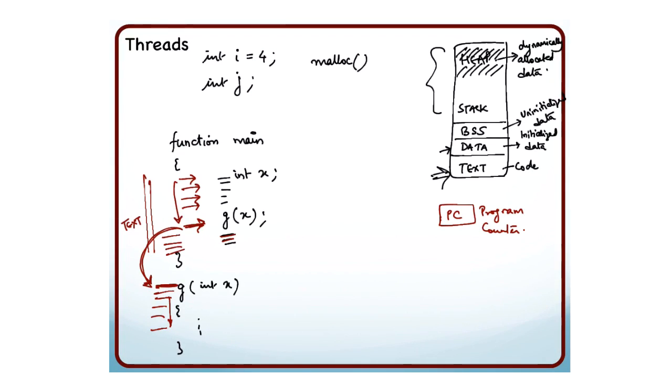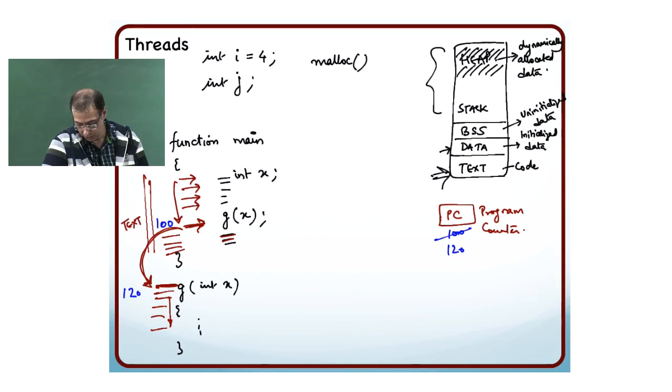All right, let us come back. We were talking about that the main function is executing and then it encounters the function call to g. Now I have to change the value of the program counter. Program counter is a register which basically keeps track of the current instruction being executed. Let us say this is location number 100 and this is location number 120. Right now the program counter has location 100 and I am just going to replace that with location 120. Now what happens, I execute this function g, I execute all the instructions, and once I am done I am supposed to go back to 101 but I have replaced the value of the program counter. So I have lost that value.